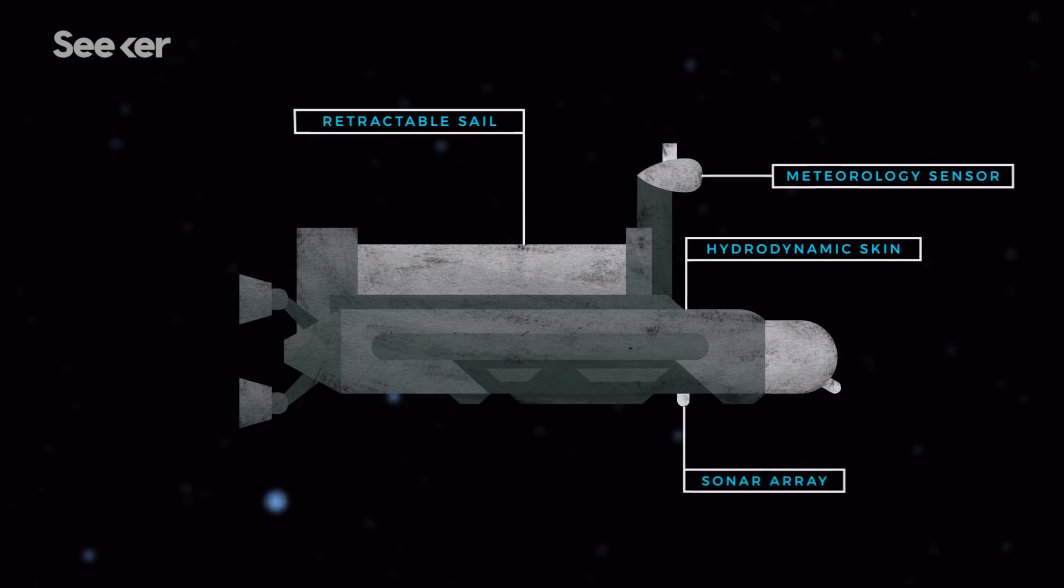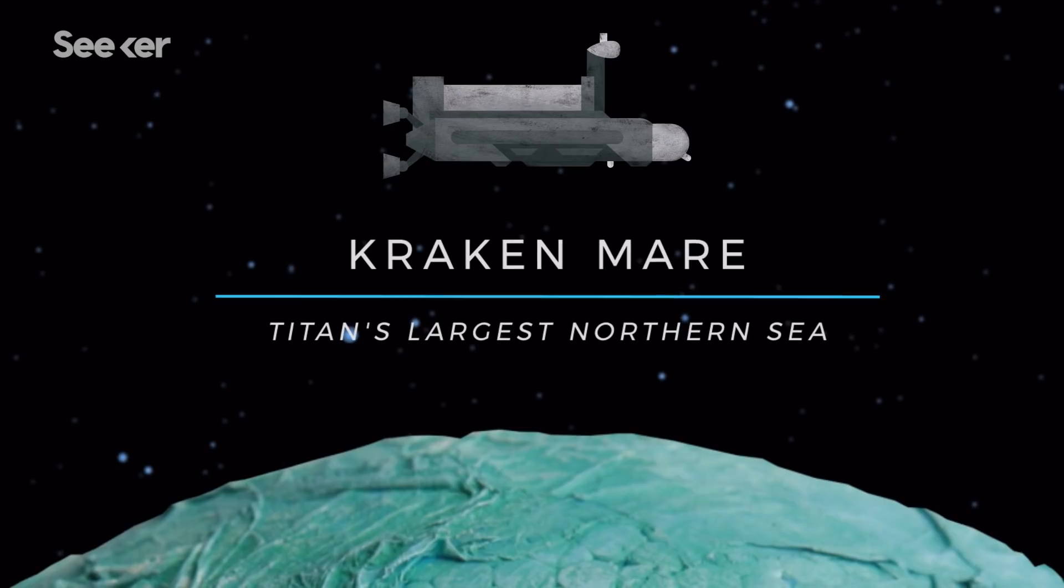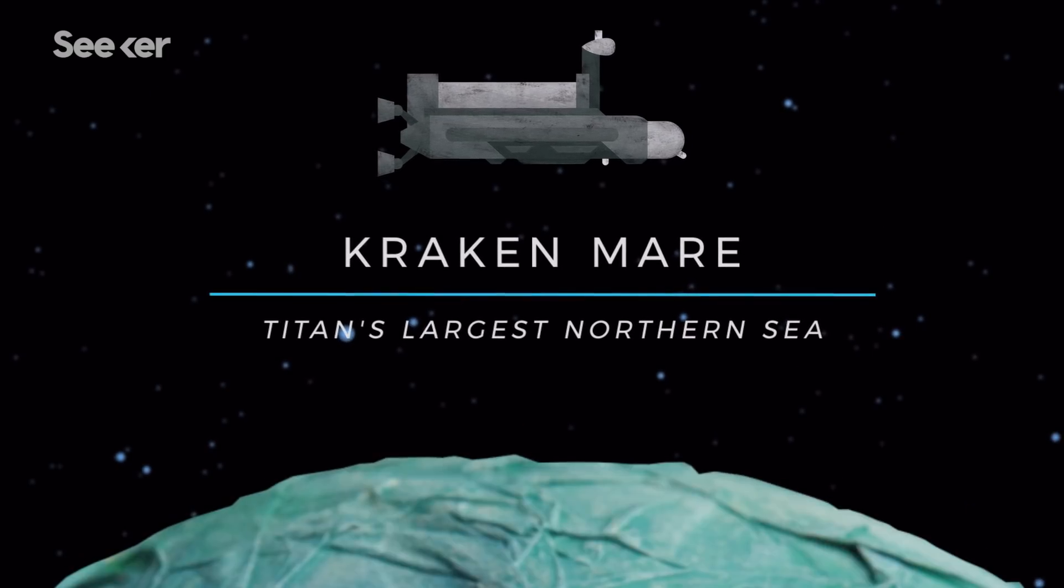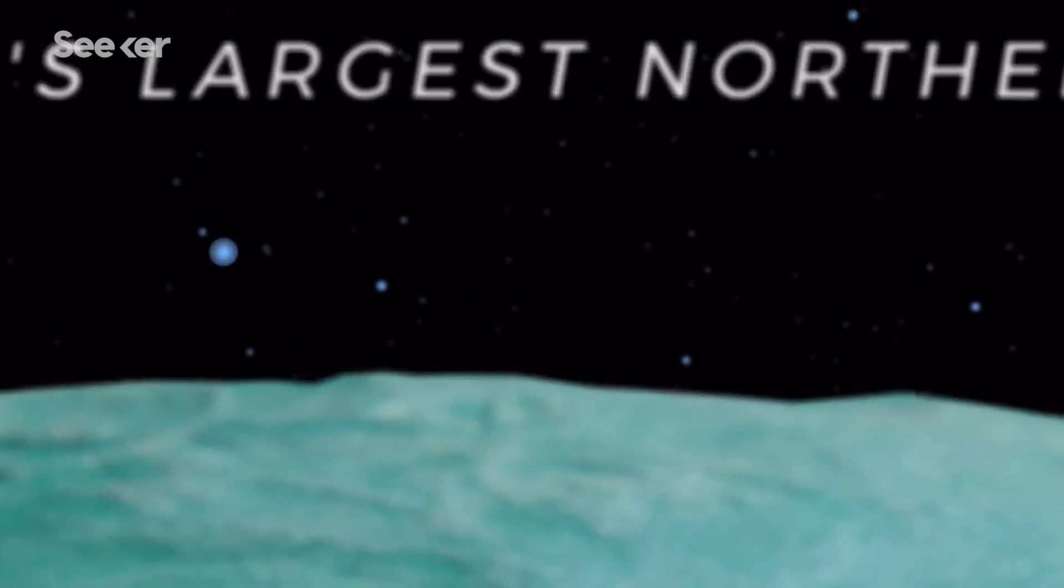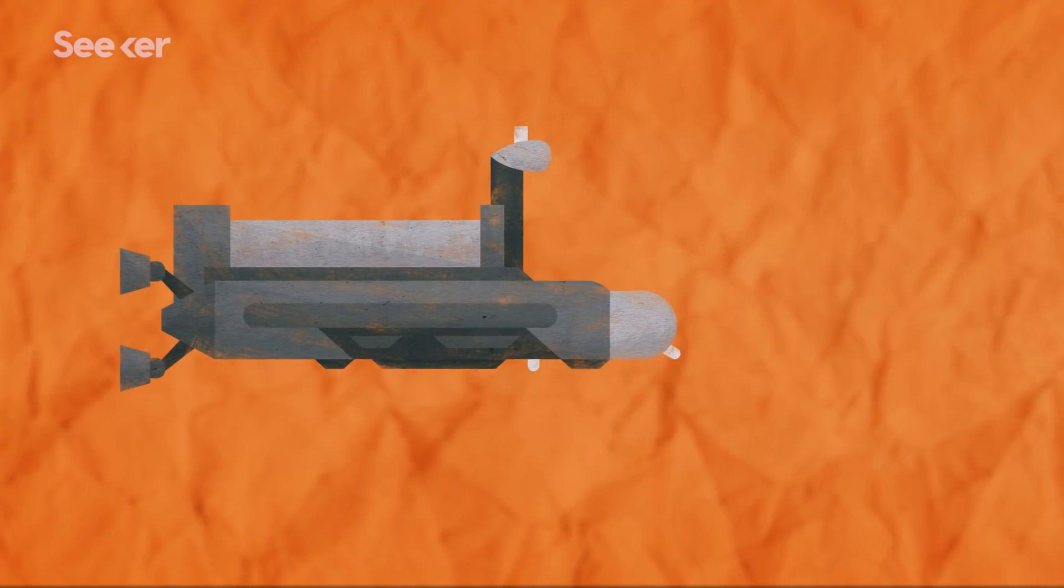To take the best pictures possible of what life is like underneath this icy moon, the plan is for the sub to explore an area called the Kraken Mare, which is Titan's largest northern sea. As it swims through the Kraken, it'll determine the lake's chemistry, its depths, and map the seafloor.